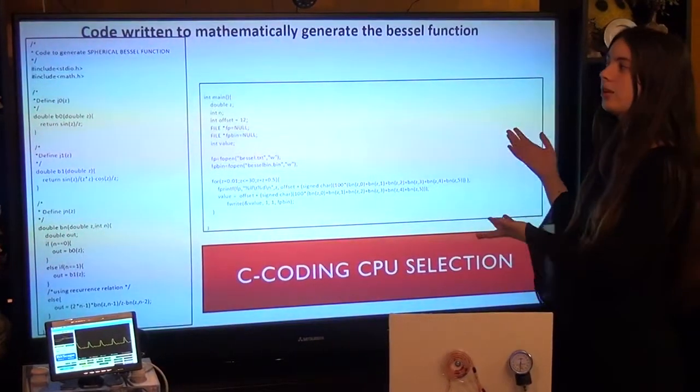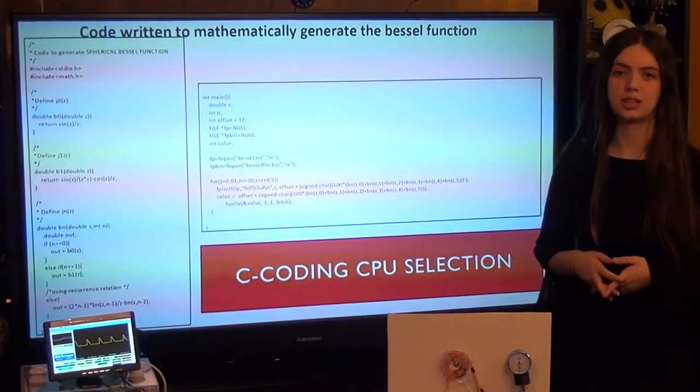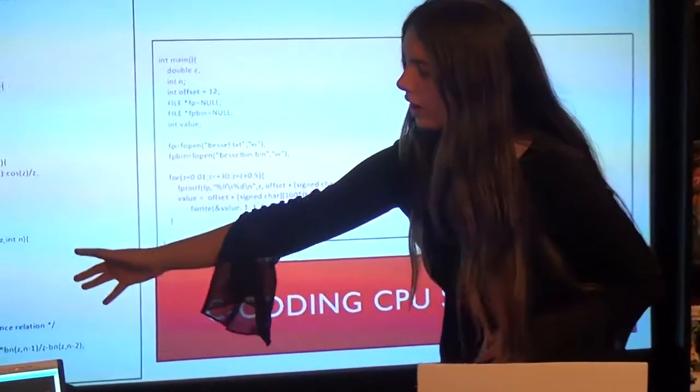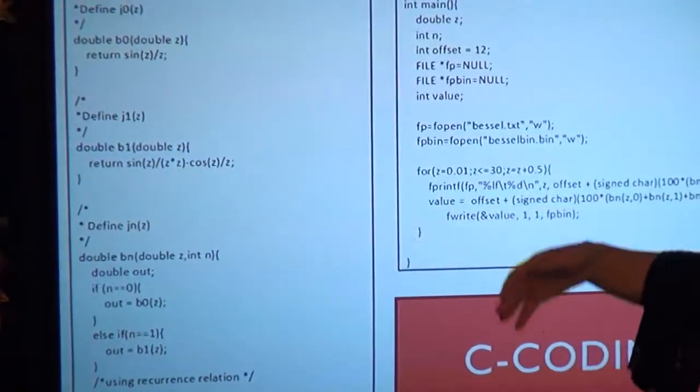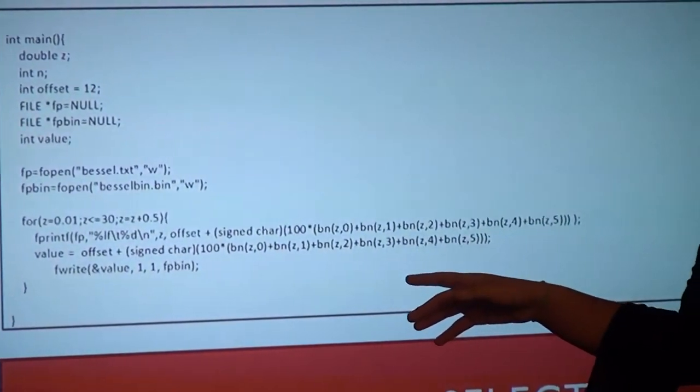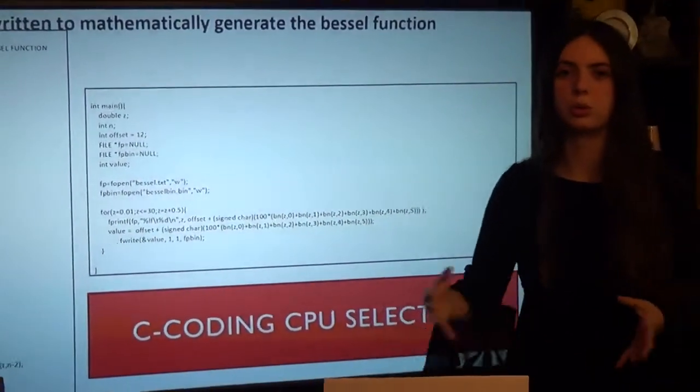Here we have the C code that was written to mathematically generate the Bessel function tractor beam-based waveform. You can see throughout the program it is calculating the Bessel function and then at the end here you can see where the phase shift is occurring to create that tractor beam push-pull effect.